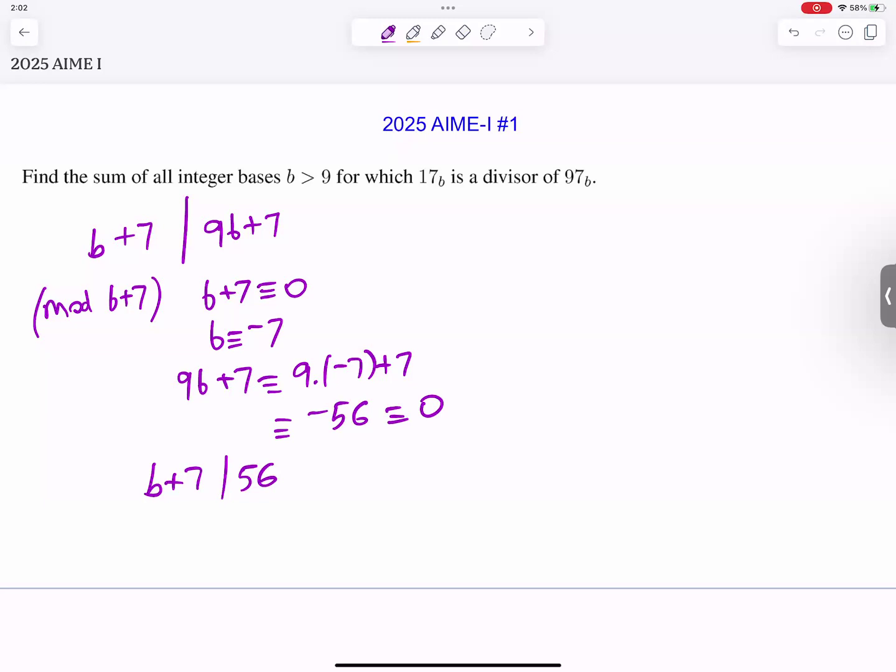Now 56 is 7 times 2 cubed, so it has 2 times 4, 8 divisors, but many of these will be too small for us. We want b to be larger than 9, so b plus 7 should be larger than 16. So we are going to exclude divisors that are less than 16.